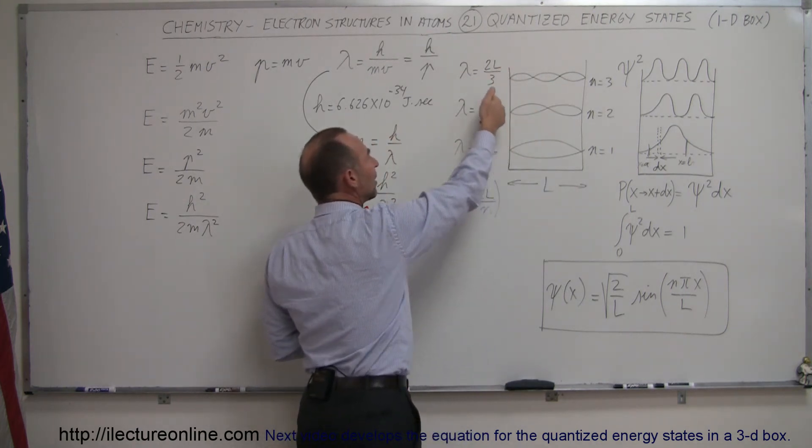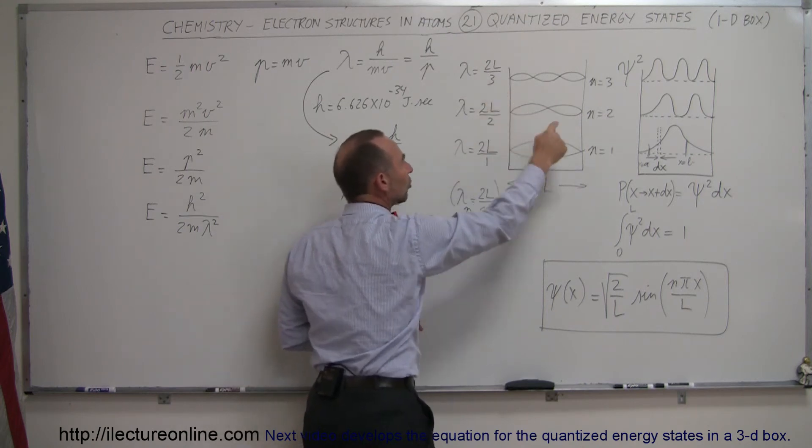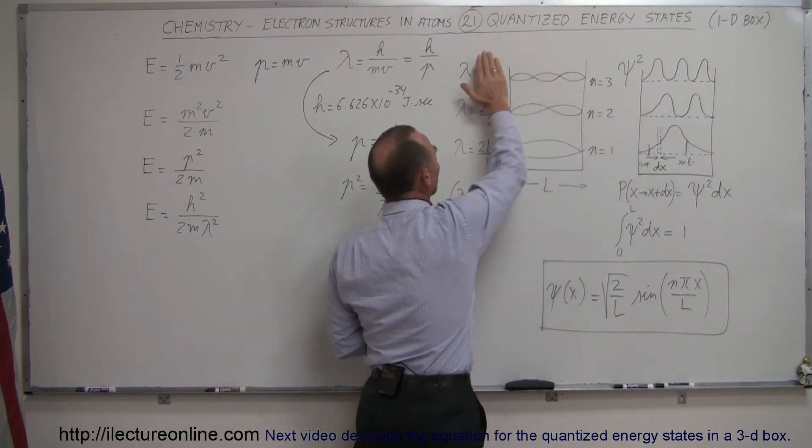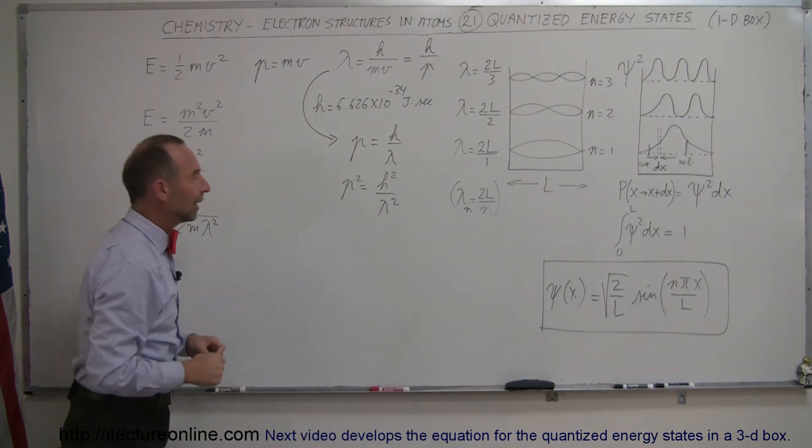Notice that the equation looks the same everywhere except for the denominator. It goes up 1, 2, 3, just like the energy levels. So I can write a general equation for the wavelength as 2l divided by the energy level n.